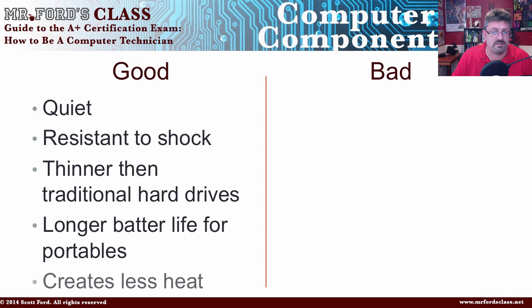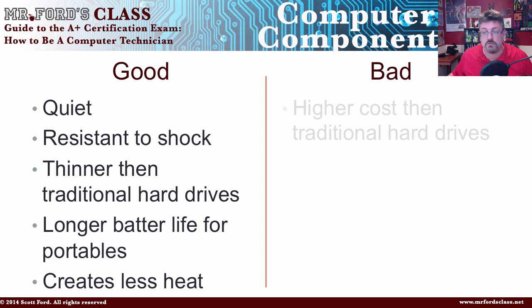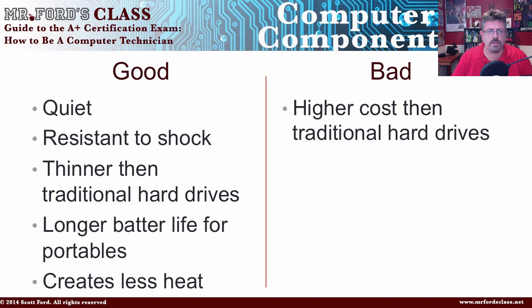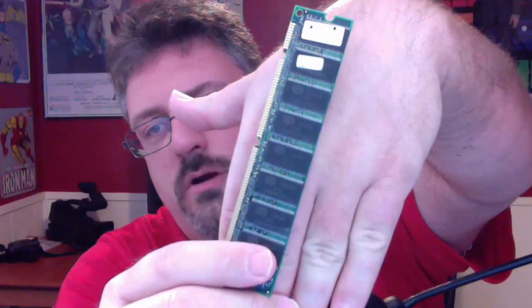Now, the bad part — you're probably going, well, if they're so great, why do we still have these guys? Because the solid state drives are a lot more expensive. You might be able to get twice the space on an old traditional hard drive for a lot less than half the space on the solid state drives. Once the technology becomes more widespread, which we're seeing happen, the prices will come down. The next device I want to talk about is your random access memory, your RAM. This is your memory stick.